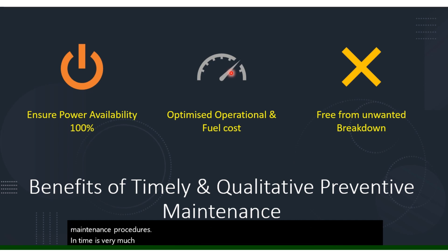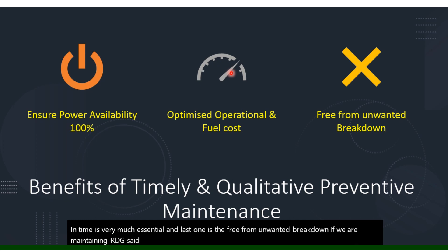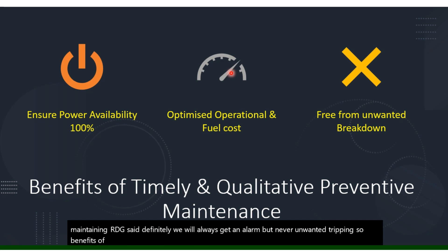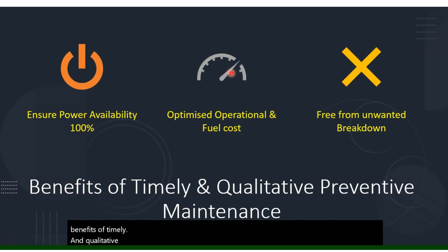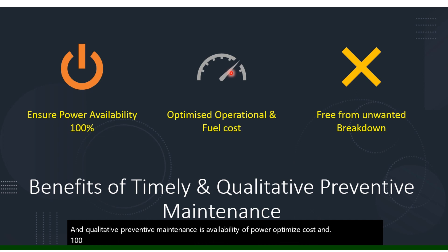To maintain costs at the bare minimum, compliance with maintenance procedures on time is essential. The third benefit is freedom from unwanted breakdowns. If we maintain our DG set properly, we will always get an alarm warning but never an unwanted trip. The benefits of timely and qualitative preventive maintenance are: power availability, optimized cost, and 100% trouble-free service without breakdown.